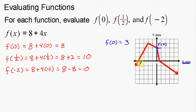Something I should mention: if we look over here, instead of looking at this as function notation, you can look at this as an equation y equals eight plus four x. This f of x — all it really means — you can think of it as just your y, your y variable, or your y-coordinate. So if you plug in x equals zero, your y-coordinate is going to be three.